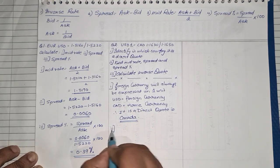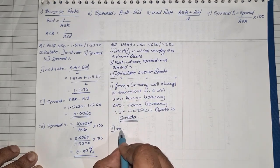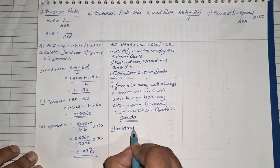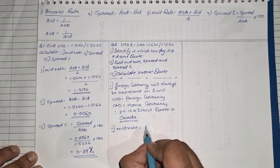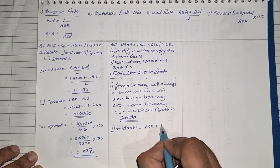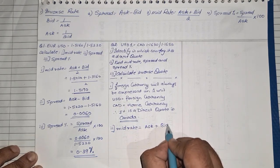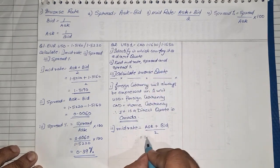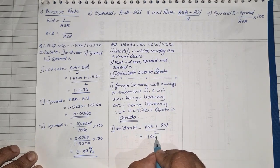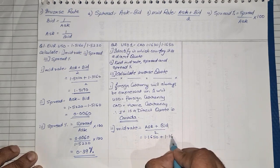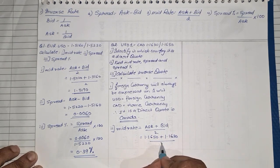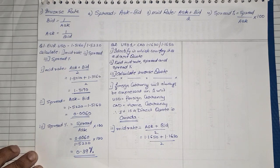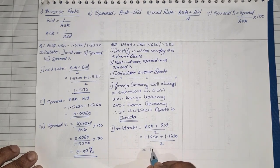Second, they asked us to find the mid rate. The formula is ask rate plus bid rate divided by two. Ask is always the second rate, so: 1.1650 plus 1.1630 divided by two. When you add and divide, you get 1.1640 as the mid rate.